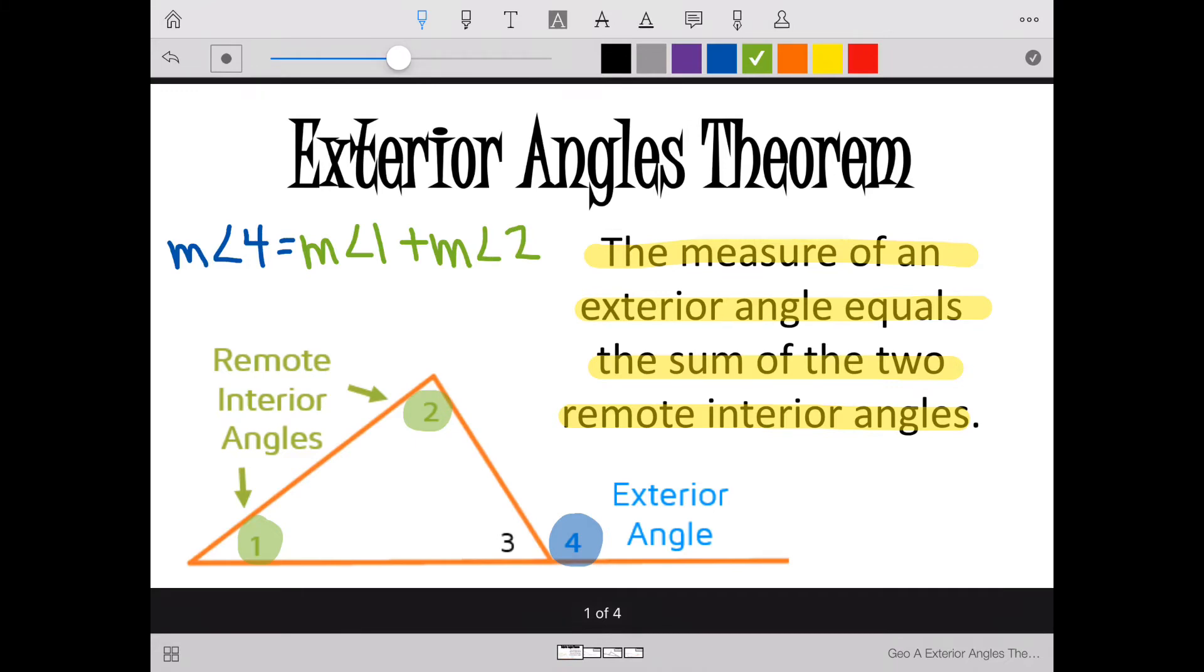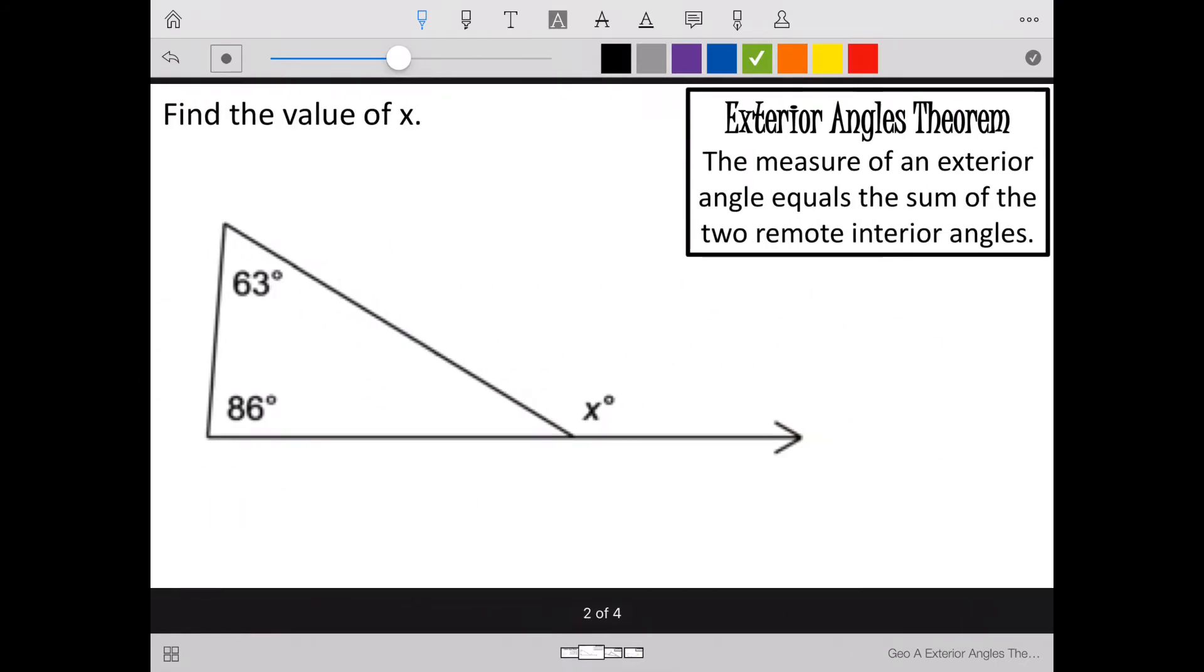Let's keep this in mind as we do some example problems. Find the value of x. We'll take a look at this. X is an exterior angle. My exterior angle has to equal the sum of my two remote interior angles. So x is going to equal my two remote interior angles added together.